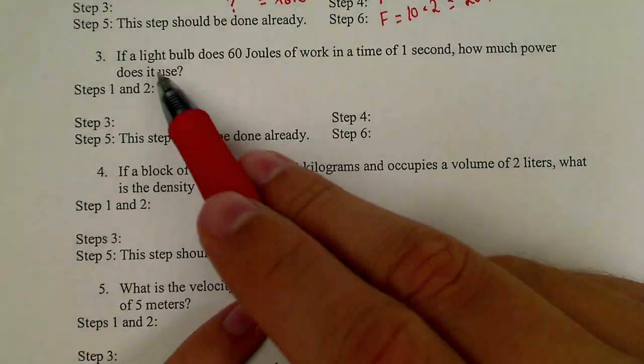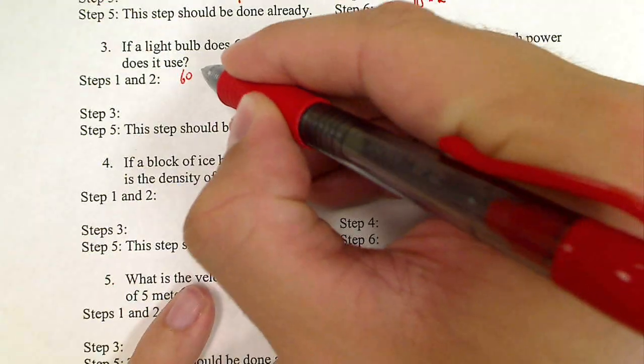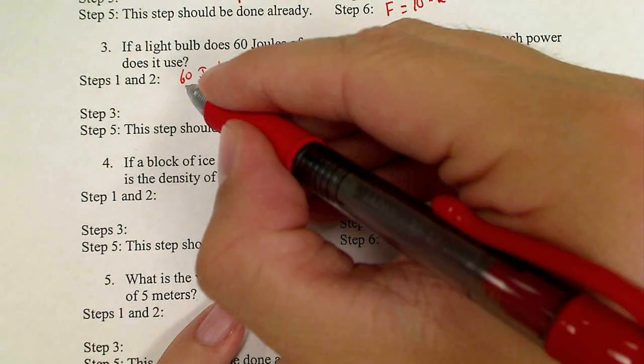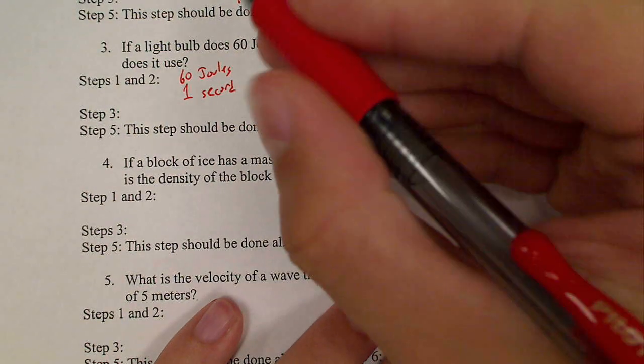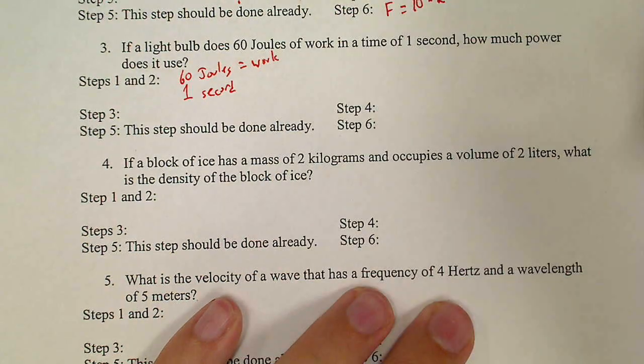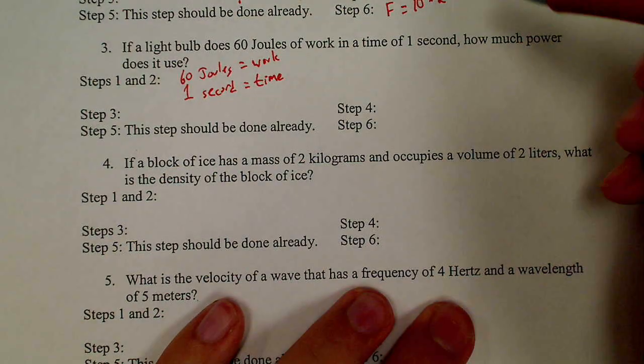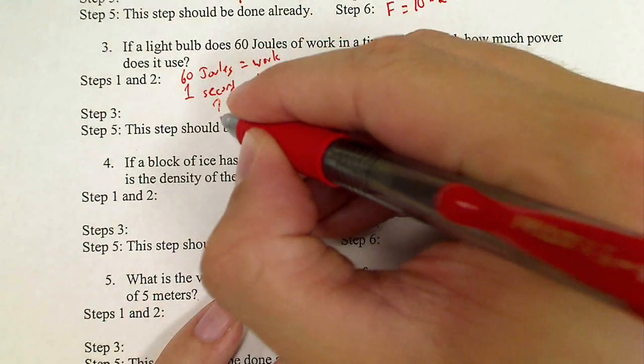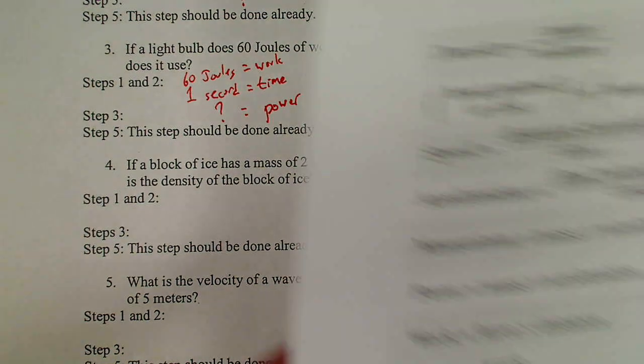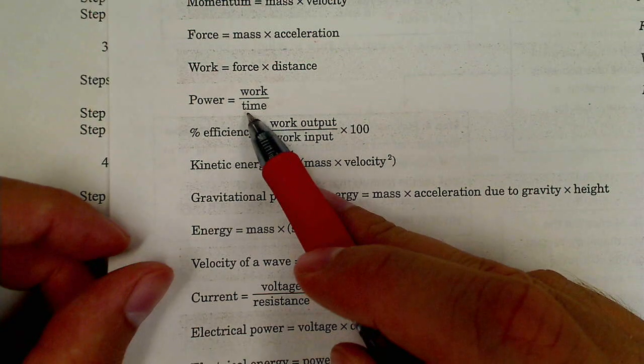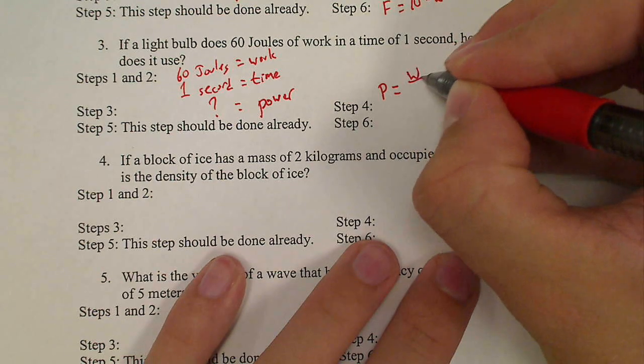Number 3. If a light bulb does 60 joules of work in a time of 1 second, how much power does it use? Step 1, write down my numbers. 60 joules, 1 second. I'm going to identify those. 60 joules of work, time of 1 second. Step 3, what are they looking for? How much power does it use? Step 4, pick out a formula. If I look for a formula that has power, work, and time in it, I find it right there. Power equals work over time.